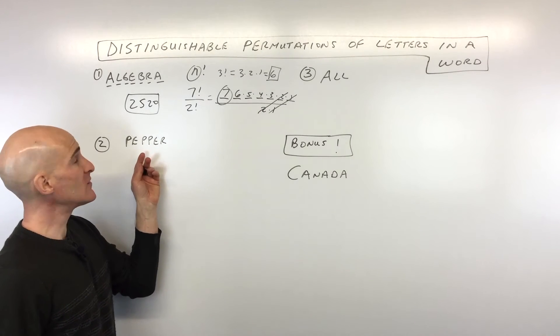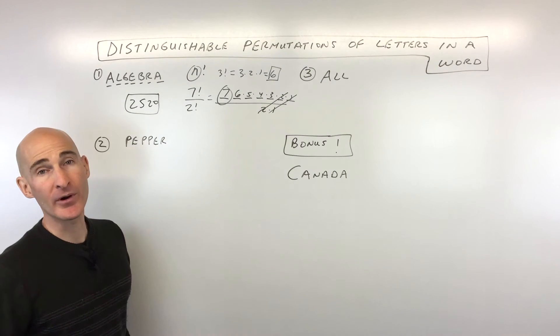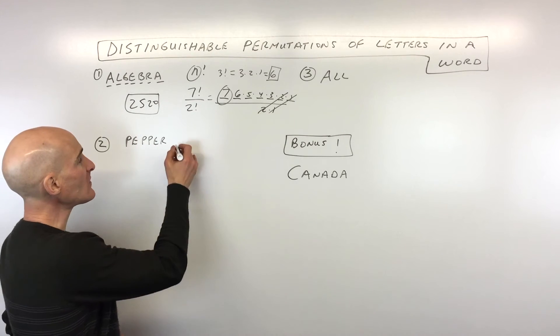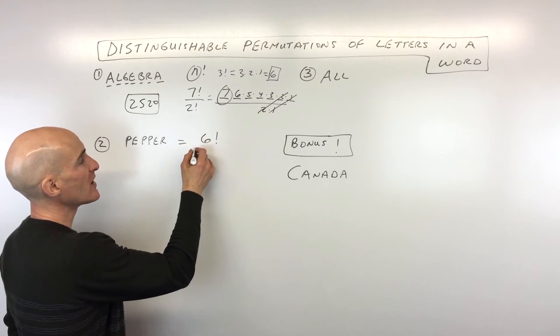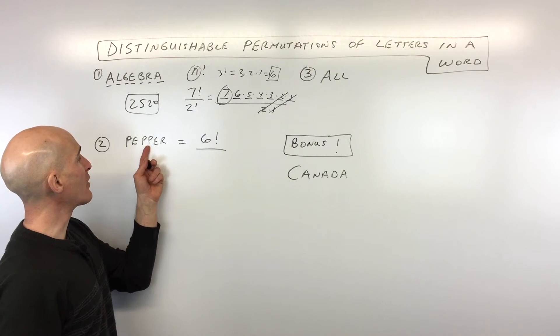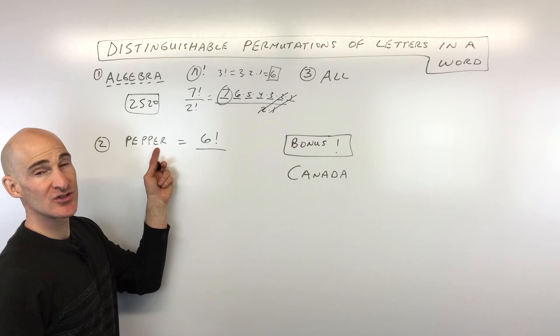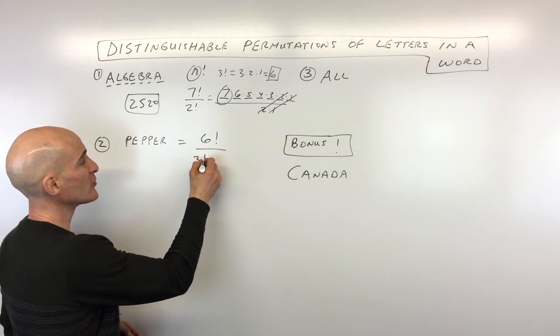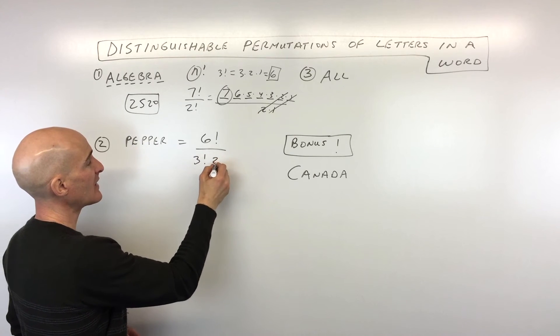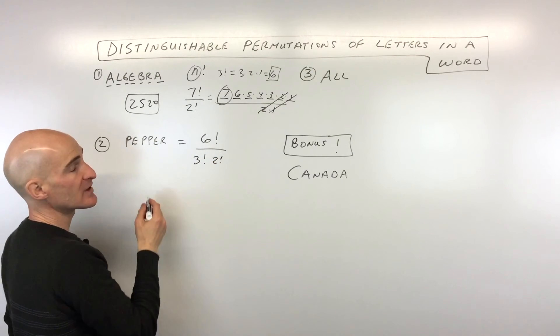So let's go ahead and do number two. See if you can do this one. We've got the word pepper. So pepper, this one has six letters. So that means there's going to be six factorial ways of arranging six of those letters. The only issue is we've got three P's and two E's. So we have to divide out those multiplicities. We're dividing out the three factorial for the P's and we're dividing out the two factorial, that's for the E's.